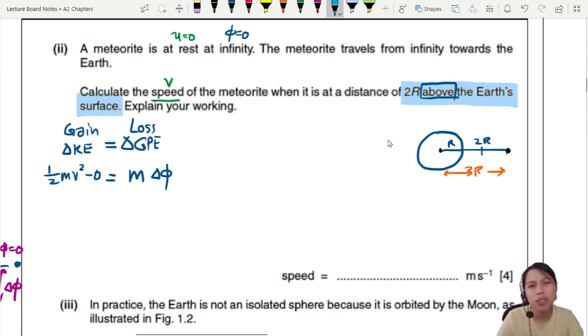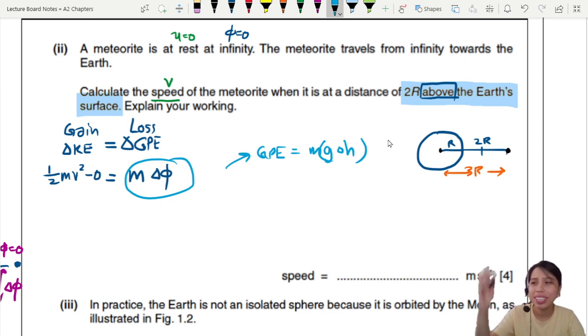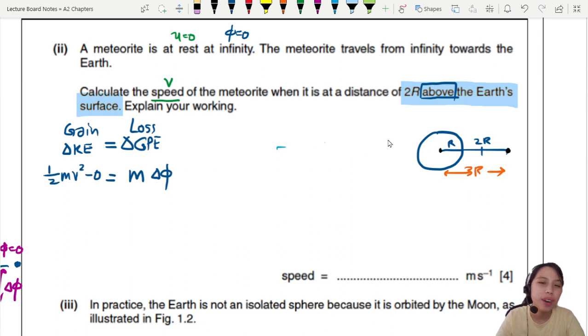the only equation that we know is M times phi. If you feel like, this one is so weird. Hello, you have used this before. But in, you know, GPE equals to MGH. The GH is the potential. Now we just level up to delta phi. So it's the same thing. Use this one. It's easier for you than using the other one. So M times change in potential, which last time we call GH. Now we have delta phi.